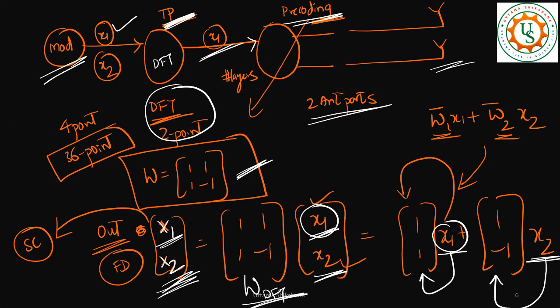Here I took a 2-point DFT, but there could be a 4-point DFT or a 36-point DFT, in which case x1, x2, and all samples will be beamformed into a space of 36 dimensions, because the DFT size is 36. So beamforming is also happening in this DFT block. Since this is happening in the digital domain, this is a form of digital beamforming. We will see more beamforming concepts in the upcoming videos. Thank you very much, please stay tuned and subscribe to the channel.